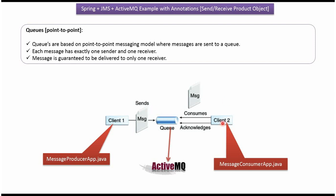Client2 is the message consumer, which consumes messages from the queue. Once it consumes a message from the queue, it acknowledges back to the queue. In this example, the consumer consumes a product object from the queue. We will use a queue of ActiveMQ in this example.